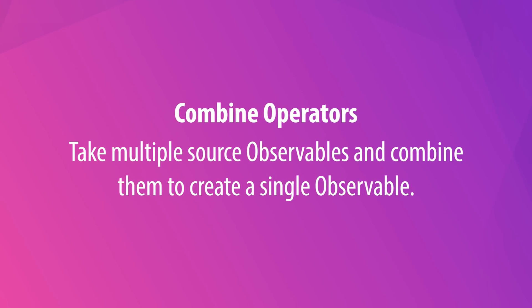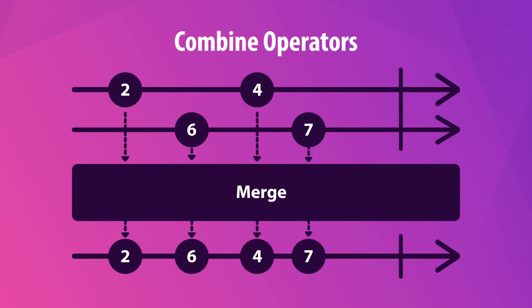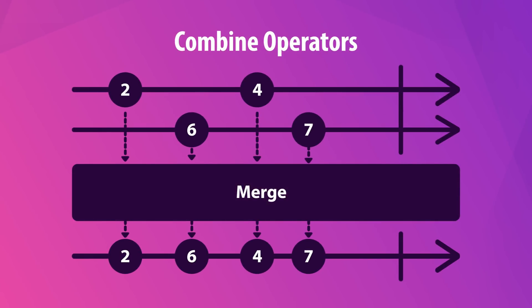Combine operators take multiple source observables and combine them to create a single observable. The merge operator is one of the simplest examples, taking two observables and merging their emissions.